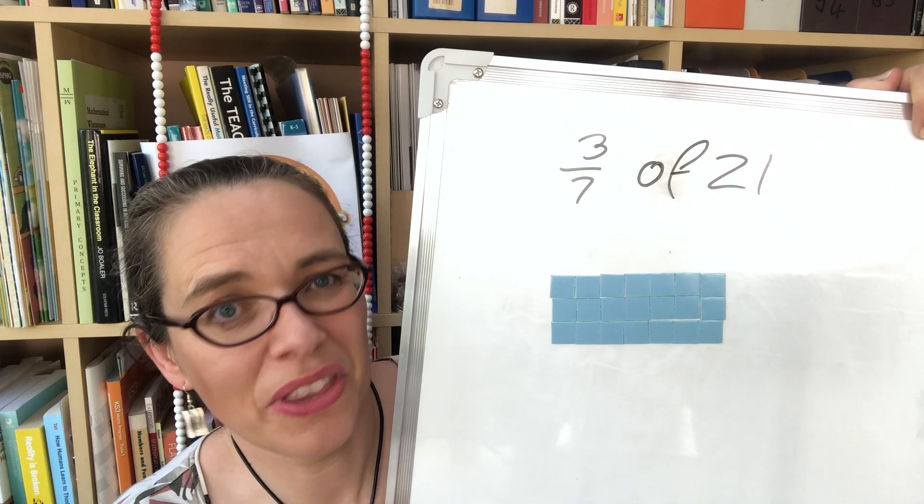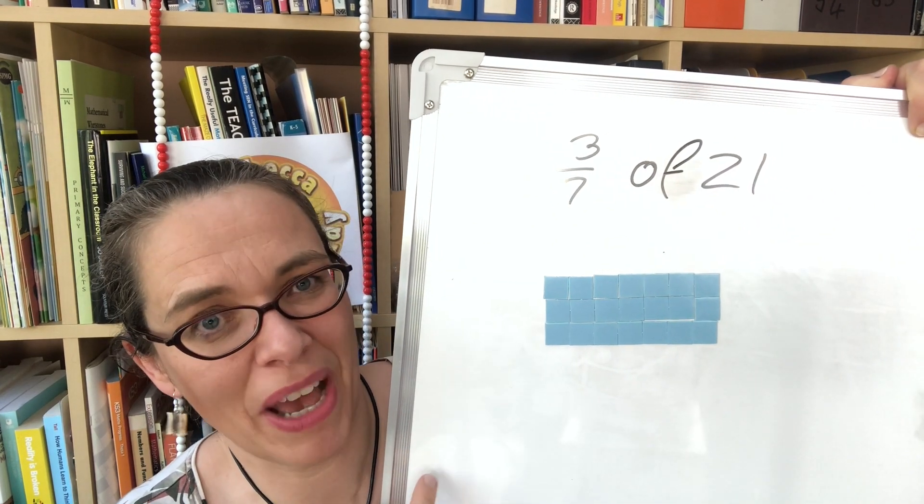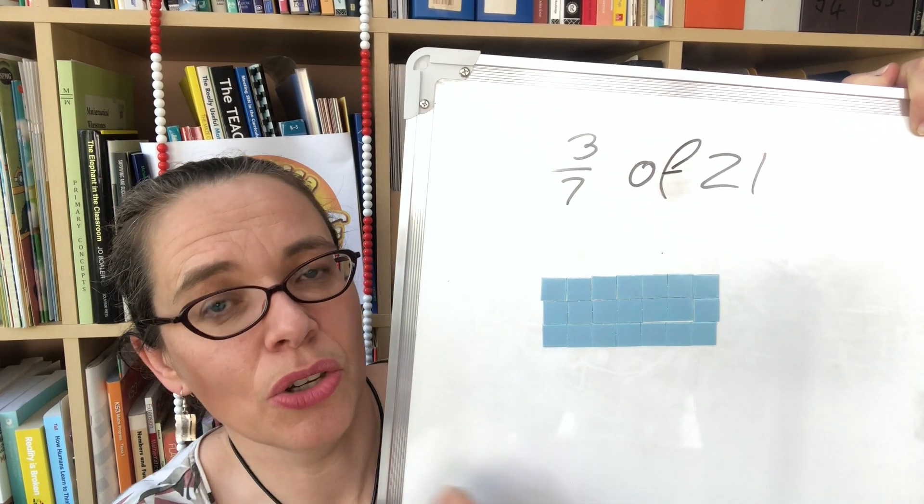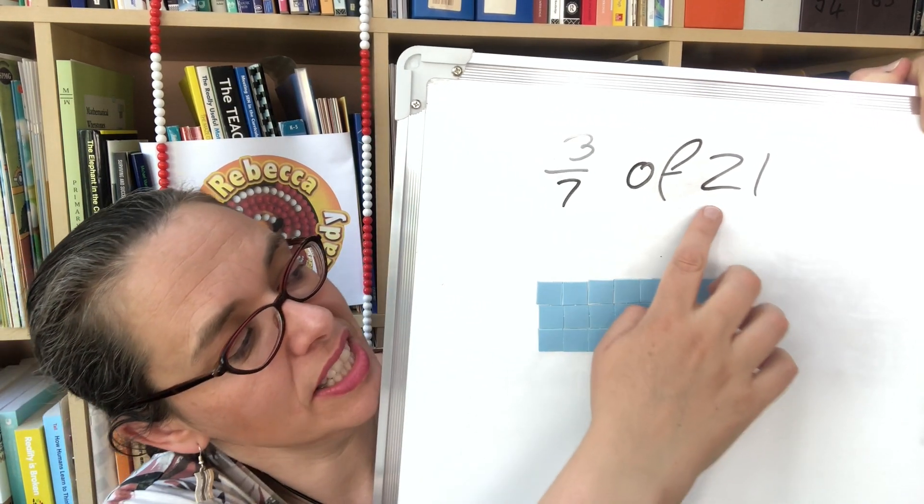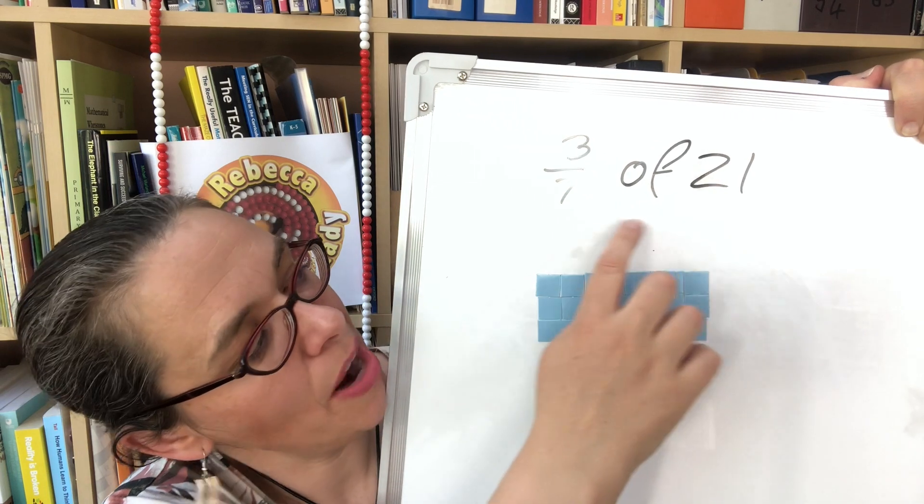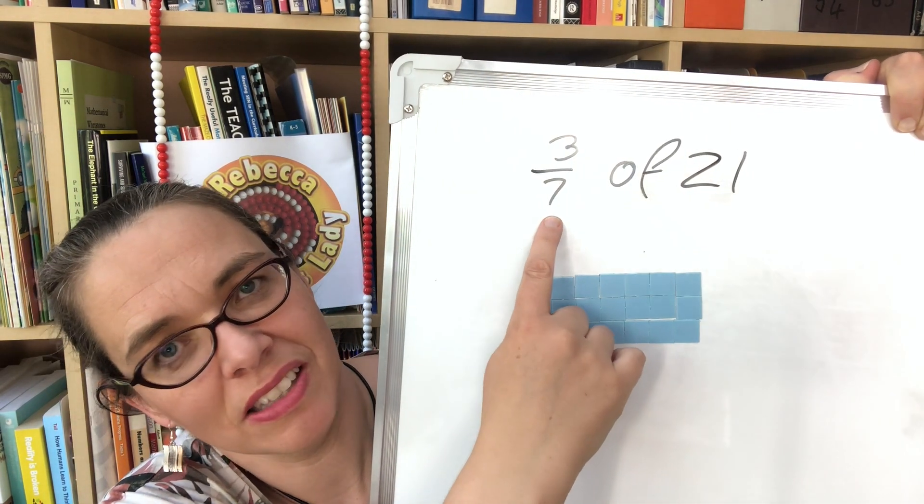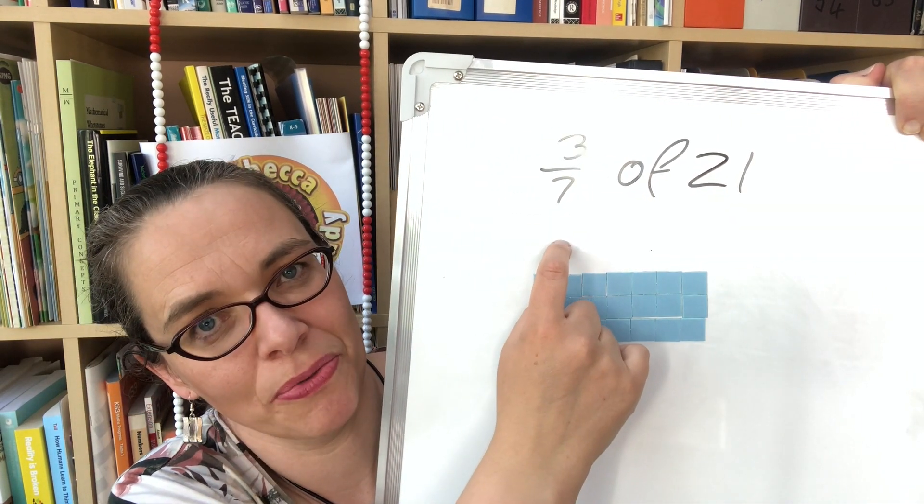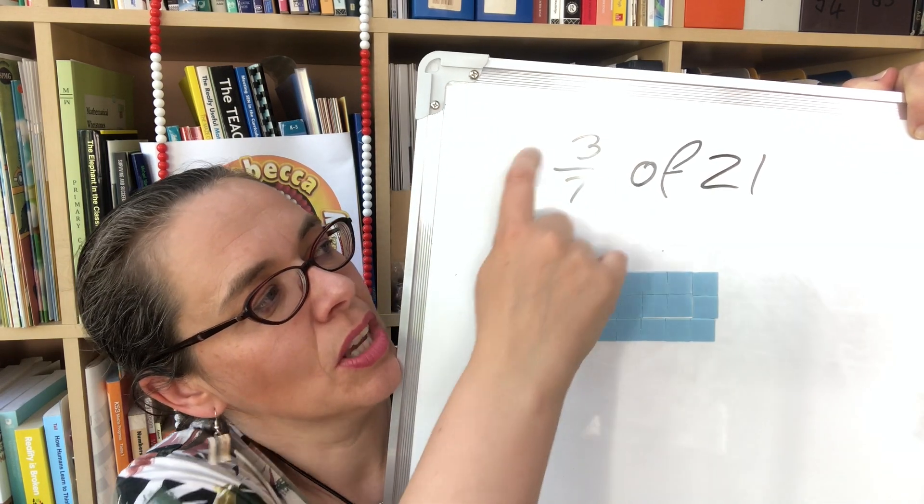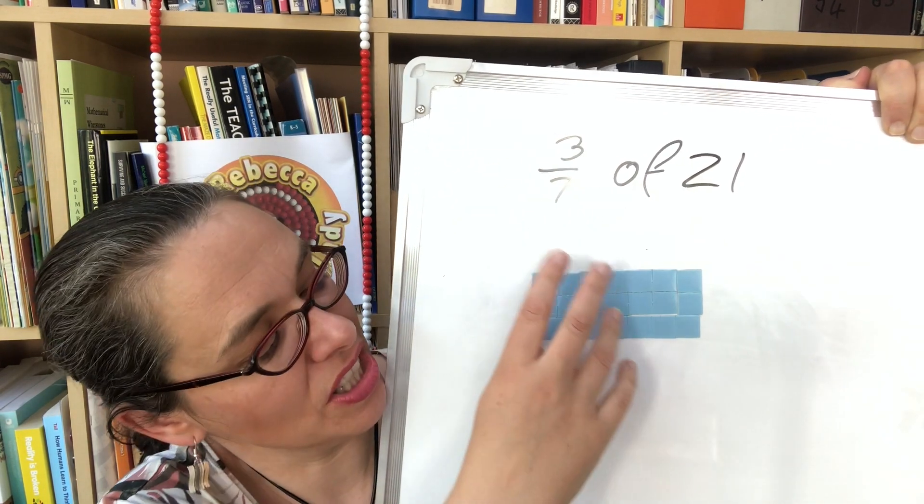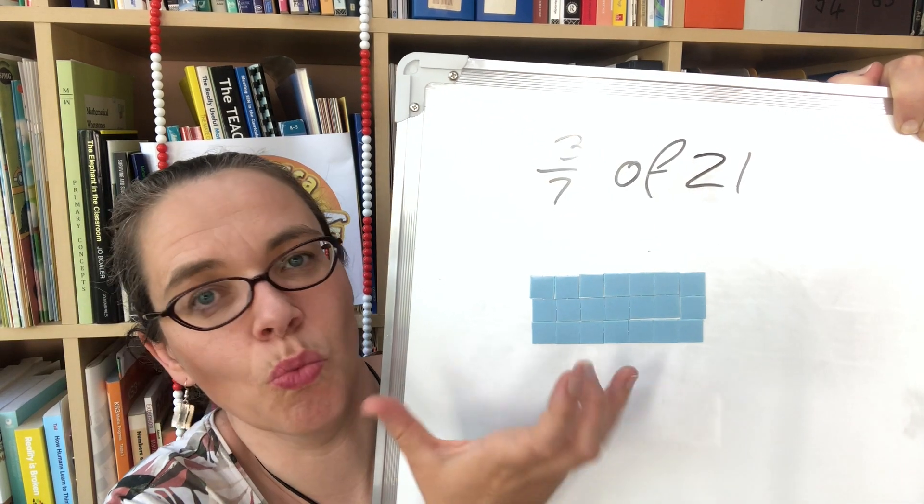As you work with your child on finding fractions of amounts with structure, you can gradually draw their attention to the reality that you need to take your amount and share it fairly into this many parts, the number of parts in the denominator of the fraction, and then multiply that result by the numerator of the fraction to take the number of parts that you want.